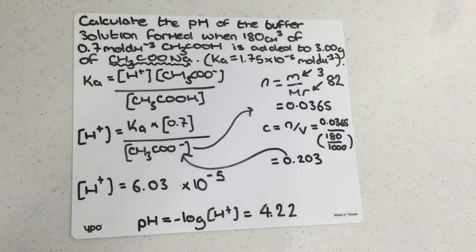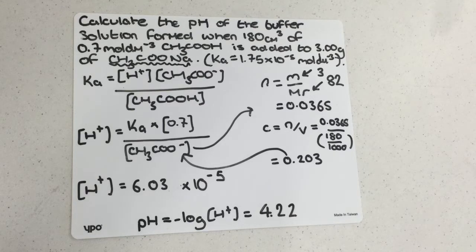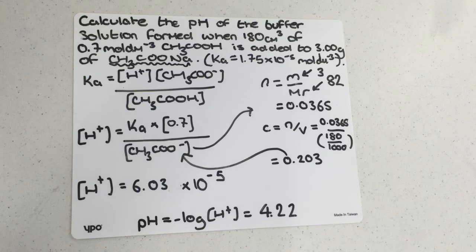The formula for the salt is sodium methanoate, CH3COONa. The Ka value is always given in the question as well for ones like this where they want you to calculate the pH of the buffer solution, as otherwise you wouldn't be able to determine it.